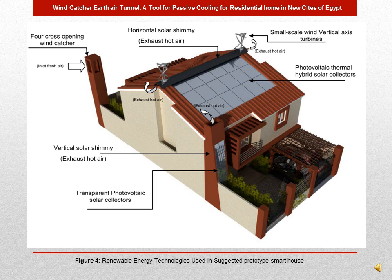The prototype contains a vertical cross-opening windcatcher for fresh air inlet, a horizontal solar chimney for hot air exhaust, and a vertical solar chimney for hot air exit. The vertical solar chimney is covered by transparent photovoltaic solar collectors which increase the temperature of air inside and can also generate electricity. The horizontal solar chimney is painted black to maximize heat and drive hot exhaust from inside. Small-scale vertical axis wind turbines generate electricity from very low wind speeds, and photovoltaic thermal hybrid solar collectors generate both electricity and hot water for domestic use.